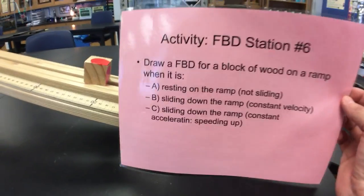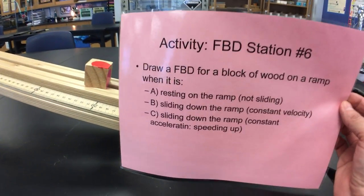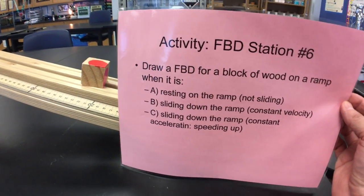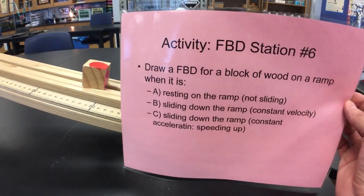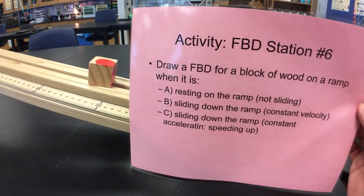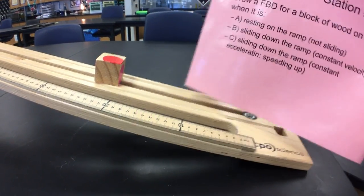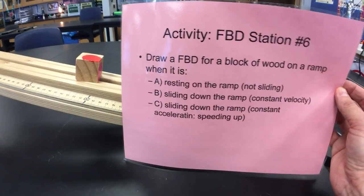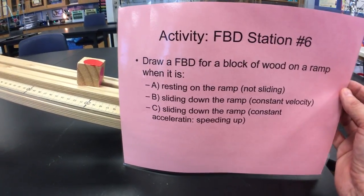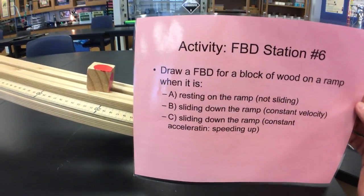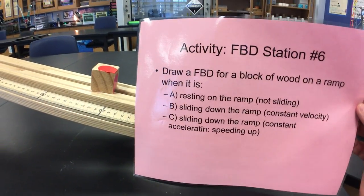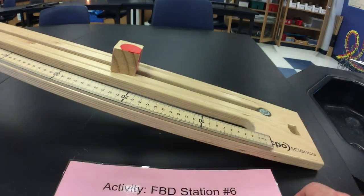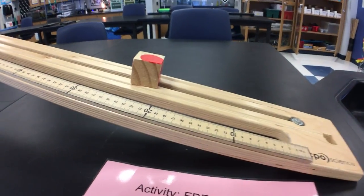FBD station number six. Draw an FBD for a block of wood on a ramp when it is: A, resting on the ramp, not sliding, just like it is right now; B, imagine it sliding down the ramp at constant velocity; and C, imagine it sliding on the ramp, constantly accelerating, speeding up.